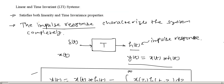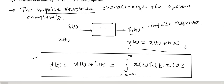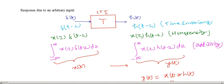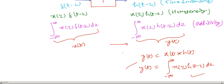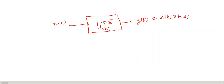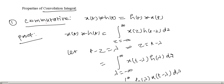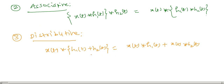What we have seen in this lecture is what an LTI system is, what is the impulse response of an LTI system, and how to calculate the response of an LTI system to an arbitrary input. We have seen that this is given by the convolution integral. We derived the response due to an arbitrary input for an LTI system, and further we have seen the properties of this convolution: commutative, associative, and distributive.